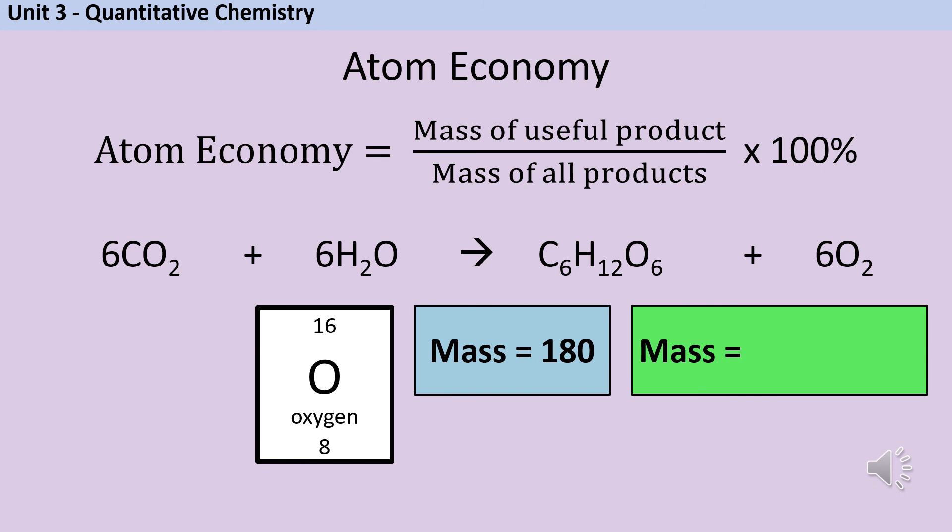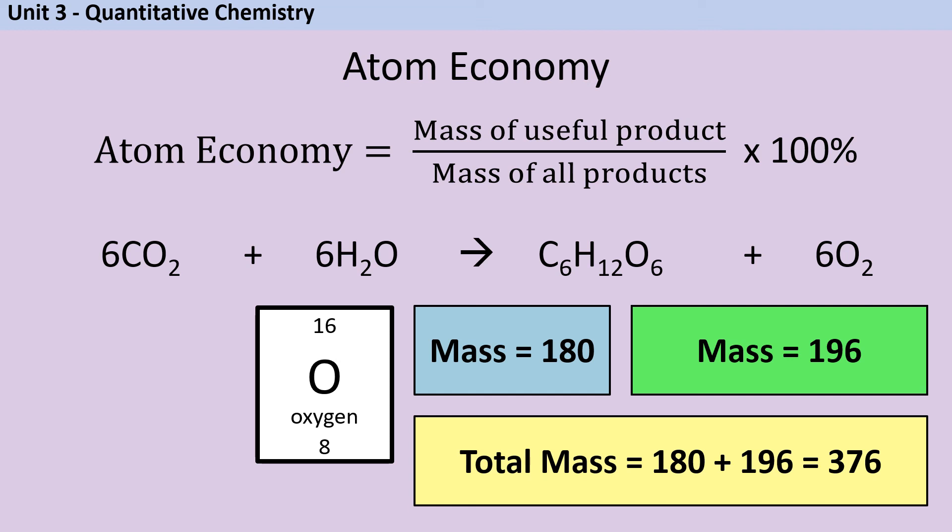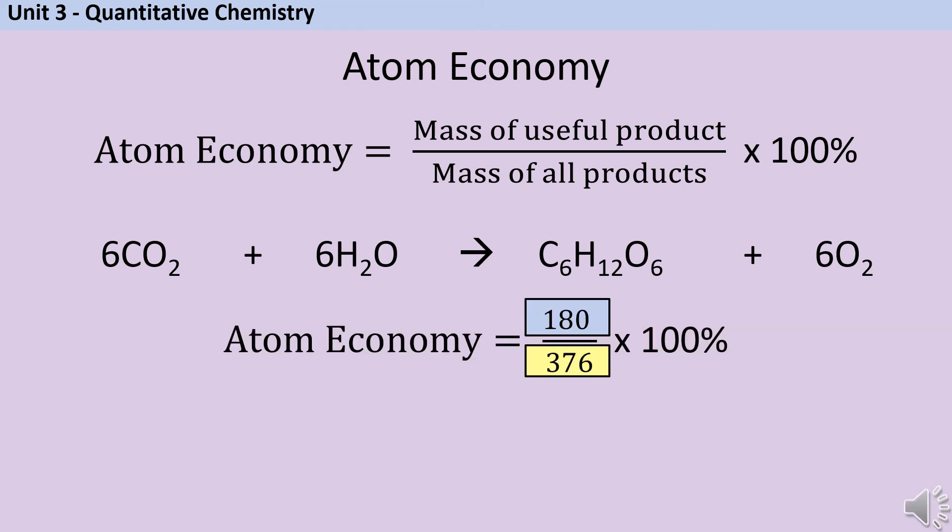Now as for my oxygen, the relative formula mass of an oxygen molecule is 32, but I've got six of them. So what I'm actually doing is six times the mass of two times 16, which in total is going to be 196. Now if I add together 180 and 196, I get a total mass of products of 376. And actually, if I added up six carbon dioxides and six waters, I would find out that that would still be 376. So it really doesn't matter that I've done it this way around. Now I'm going to put those numbers back into my equation. 180 divided by 376 times 100% to make it a percentage, and if I round that to two significant figures, that gives me an atom economy of 48%.